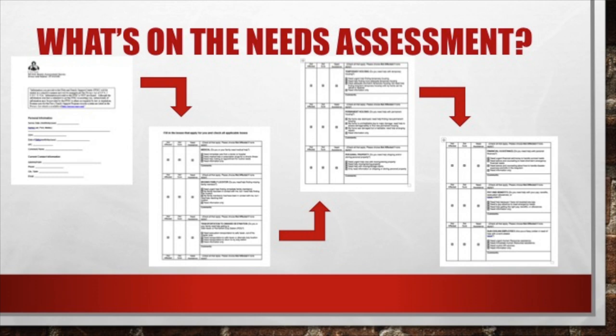So what's on the needs assessment? This document covers 19 categories of things to include legal, financial, food assistance, schools, housing, childcare, and other various items. You will be asked to rank how affected you are in those various categories.